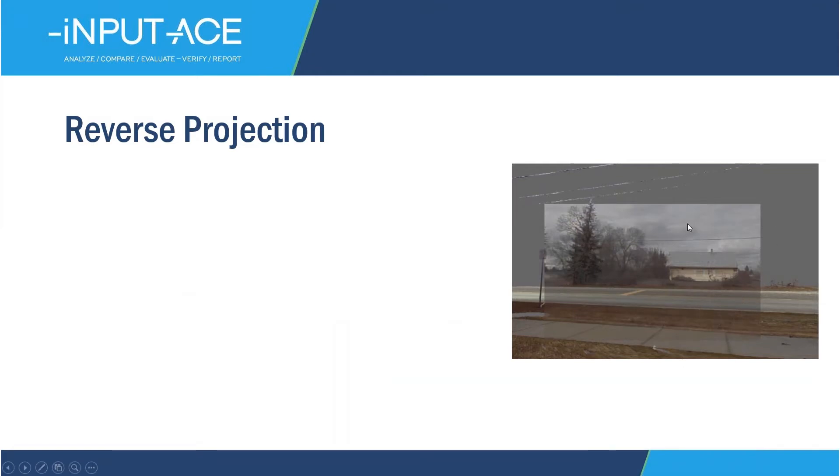Reverse projection is a technique that involves taking video evidence, overlaying it on top of a 3D point cloud, and then dissolving back and forth between the image on top and the 3D data on the background to then project through the image and measure positions.